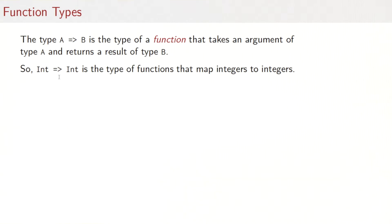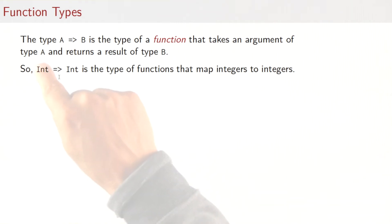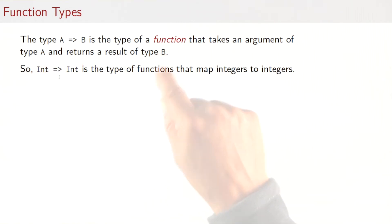One thing that's new here is a function type. A function type is written a arrow b, where a and b are types. It's the type of a function that takes an argument of type a and returns a result of type b. So for example, int arrow int is the type of functions that map integers to integers.